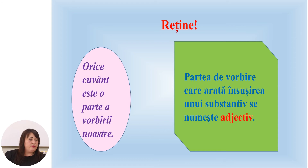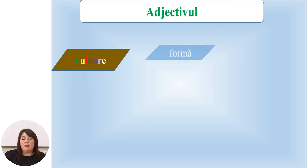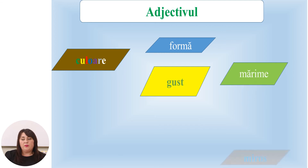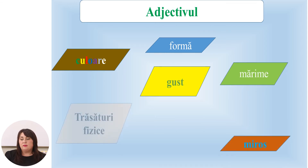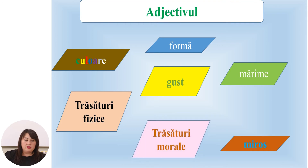Însușirile se pot referi la culoare, la formă, la gust, la mărime, la miros, trăsături fizice, cât și trăsături morale.